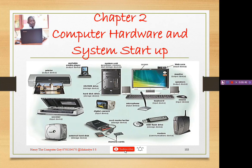In short, computer hardware are specifically those physical or tangible components of a computer — you can touch them and feel them. They can be input, which helps us to enter data into our computer. They can be processing, which helps us to convert data into information — for example, the CPU. They can be storage, which helps us to retain or keep our data — for example, the flash disk or the hard disk. They can be communication, which helps two or more computers to communicate with one another. They can be output, which helps us to display processed data or information to the user — for example, the monitor or the projector.